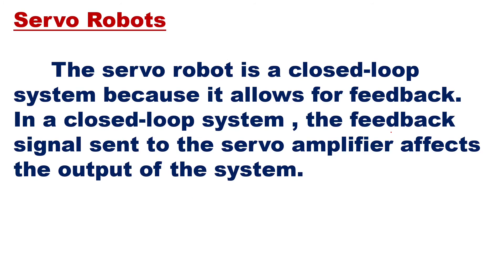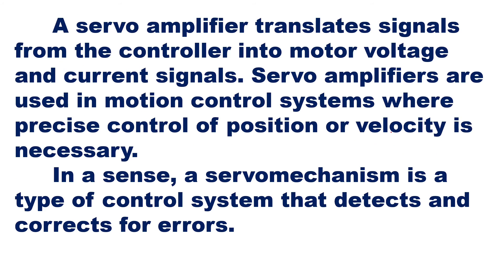The servo robot is a closed loop system because it allows for feedback. The feedback signal sent to the servo amplifier affects the output of the system. A servo amplifier translates signals from the controller into motor voltage and current signals. Servo amplifiers are used in motion control systems where precise control of position or velocity is necessary. A servo mechanism detects and corrects errors, minimizing them compared to the open loop non-servo control system.